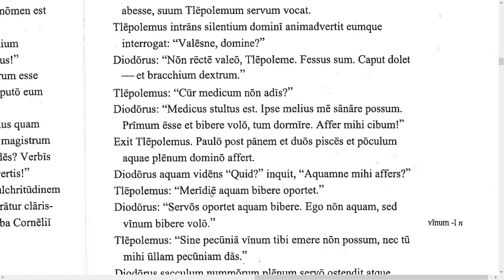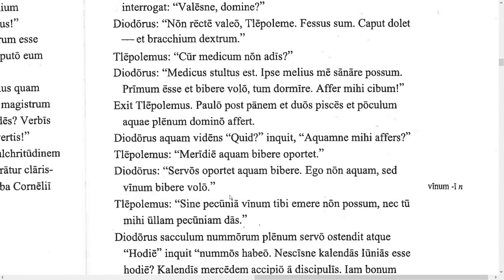Tlepolemus says, 'Meridie aquam bibere oportet' — at noon it is fitting, it is proper to drink water. 'Oportet' expresses social necessity — it's fitting, proper, necessary. Diodorus replies, 'Servo oportet aquam bibere' — it is fitting for slaves to drink water. 'Ego non aquam sed vinum bibere volo' — I do not want to drink water but wine.